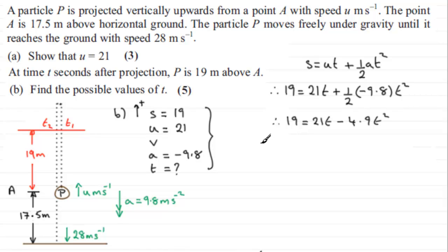So therefore what we have is 4.9 T squared minus the 21T, and then plus 19, equals zero.